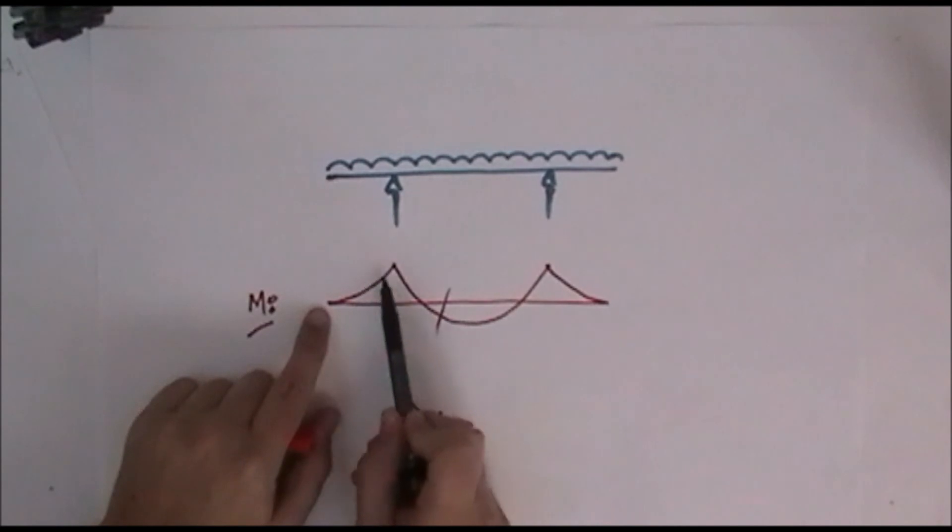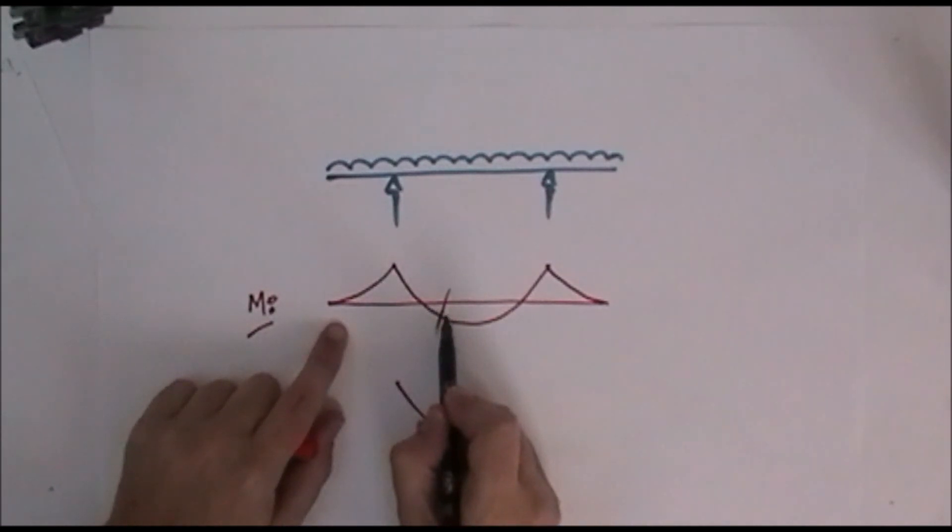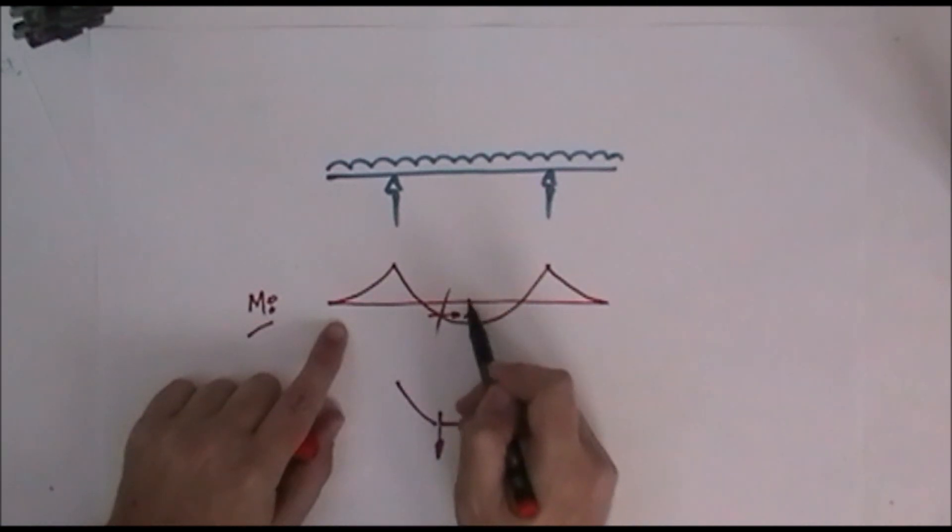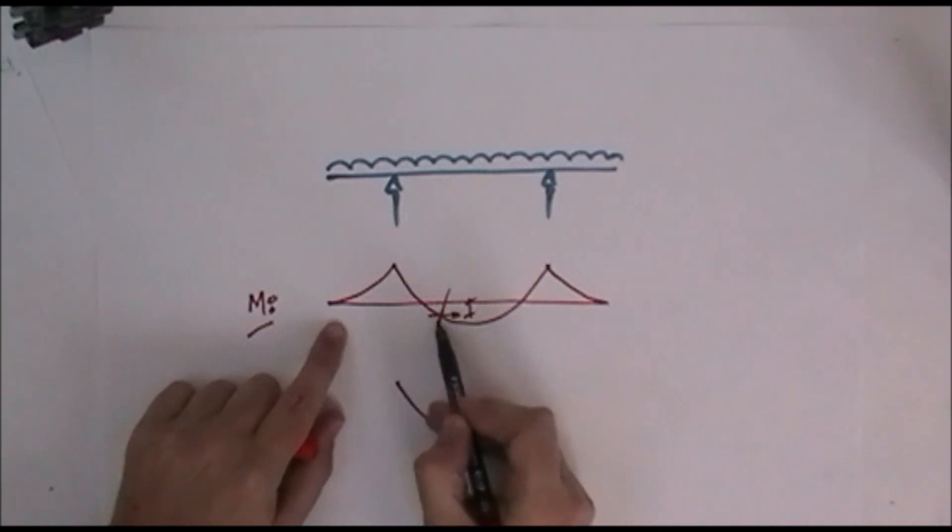the horizontal component of the force at any cut is a constant. And therefore, at this point, we have a constant horizontal force. And if I take that constant horizontal force and multiply it by the offset to the original datum, I will get a bending moment about that datum.